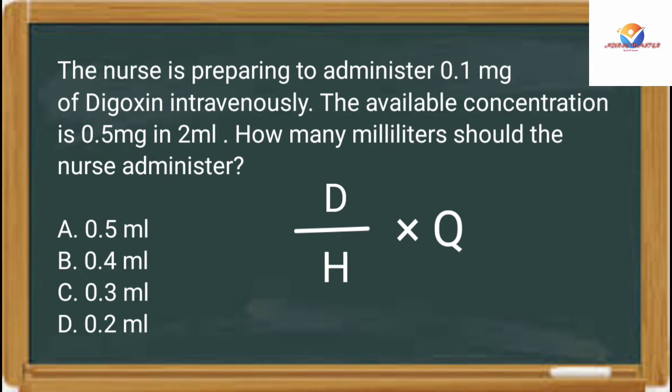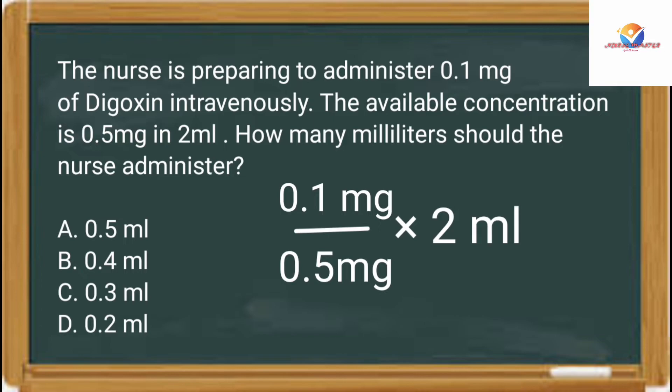The formula for dose calculation is D divided by H, multiplied by Q. D stands for desired amount, H for have available, and Q for quantity. The desired amount is 0.1 mg. H is the amount available in one ampule, which is 0.5 mg. Q is the quantity in one ampule, which is 2 mL.